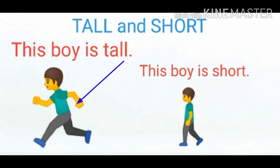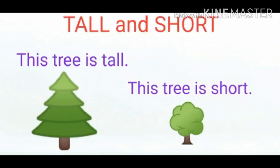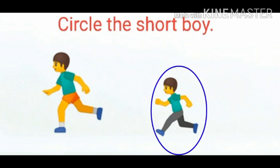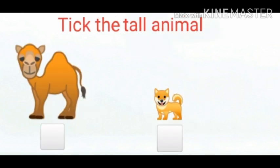This boy is tall, this boy is short. This tree is tall, this tree is short. Circle the short boy. Circle the tall animal.